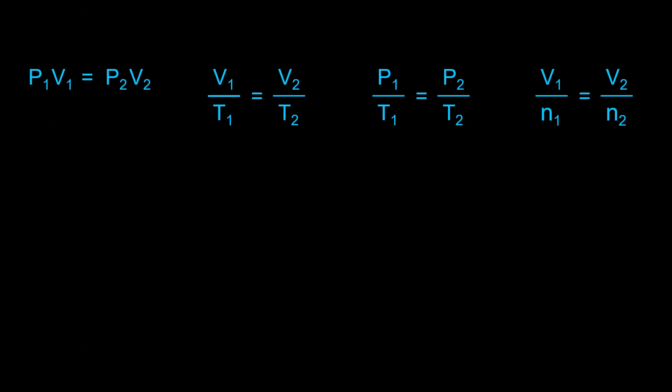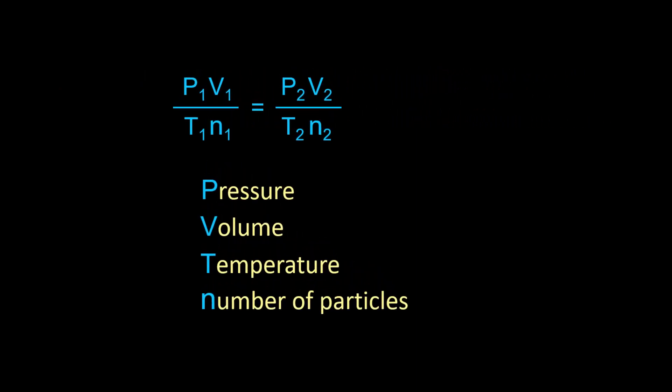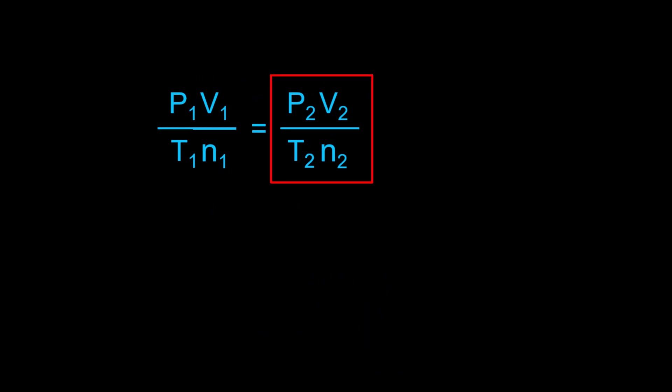We can look at the relationship of all four variables by combining these equations into one equation, showing the relationship of all four variables with an initial and final condition.